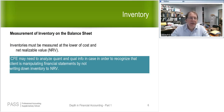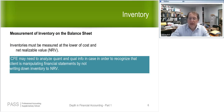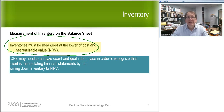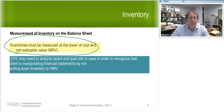Everybody knows this probably. Inventory — what's the accounting? You measure at the lower of cost and NRV. Do me a favor: don't say 'market,' because NRV might be the best determinant of market, but the standard says NRV, not market.